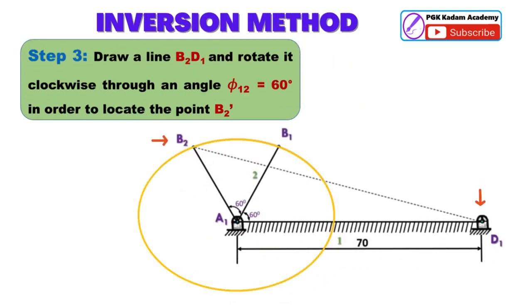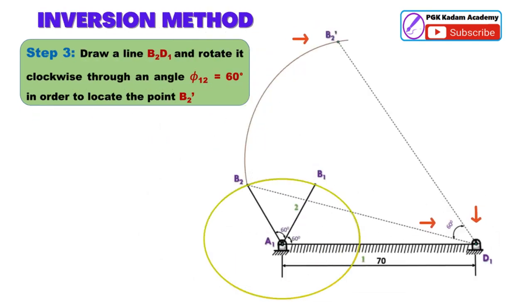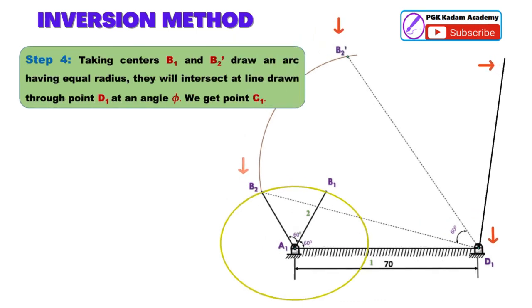Step 3: Draw a line B2D1 and rotate it clockwise through output link point D1 from angle phi 1-2 equal to 60 degrees in order to locate point B2 dash. Step 4: Taking centers B1 and B2 dash, draw an arc having equal radius.